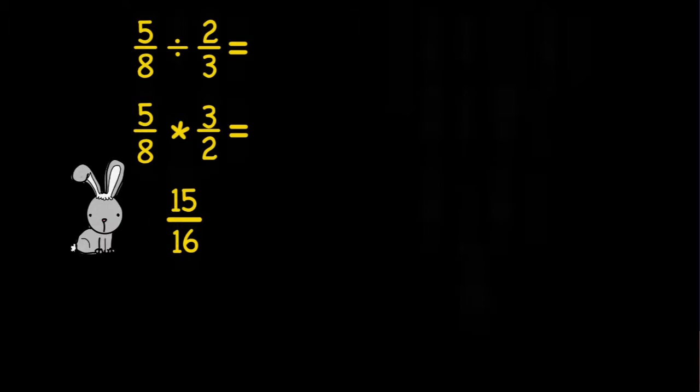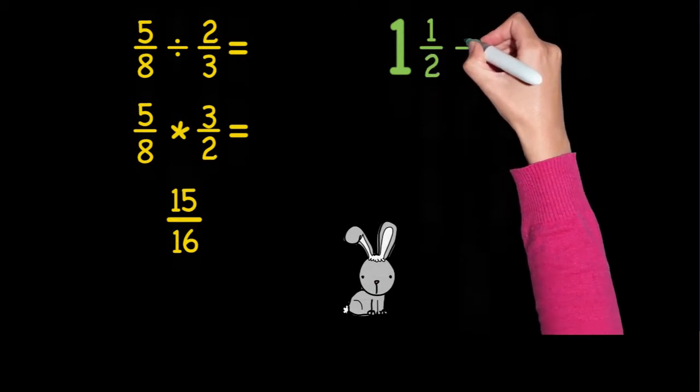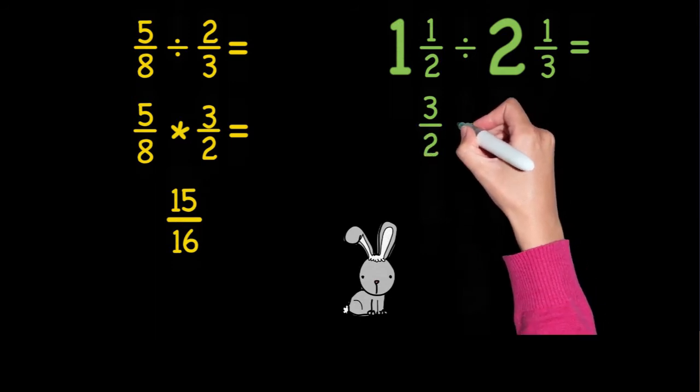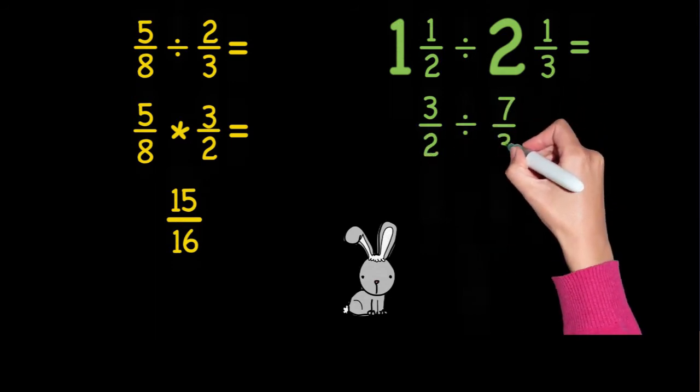Now let's look at the problem involving mixed numbers. 1 and a half divided by 2 and a third. Just like in multiplication, the first thing I need to do is to change my mixed numbers into fractions. 1 and a half becomes 3 over 2, and 2 and 1 third becomes 7 over 3.